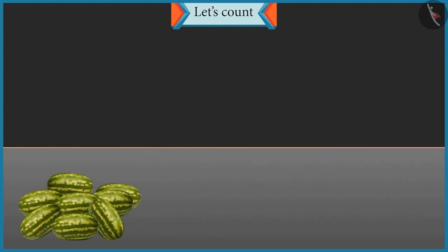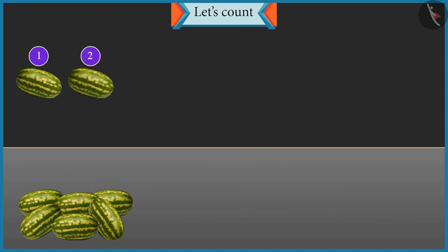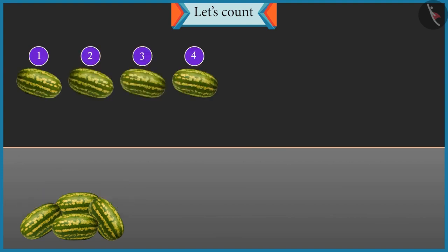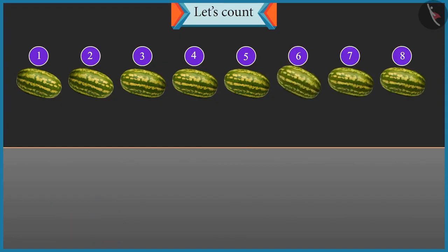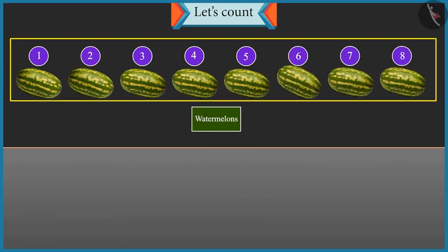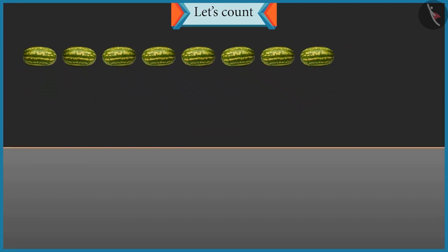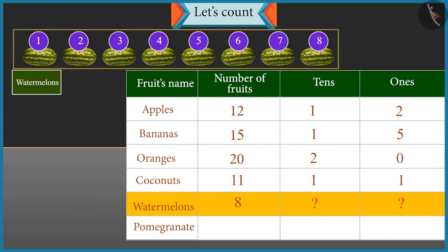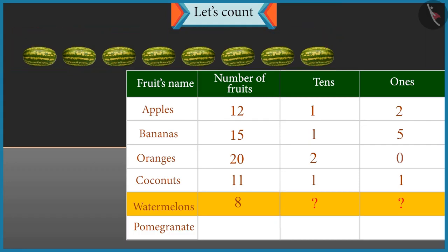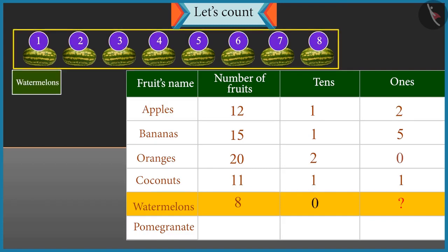Now count these watermelons and tell their count. One, two, three, four, five, six, seven and eight. There are eight watermelons. So how many tens and ones are there in eight? There are only eight watermelons, so we cannot form any group of ten. So there is zero tens and eight ones.